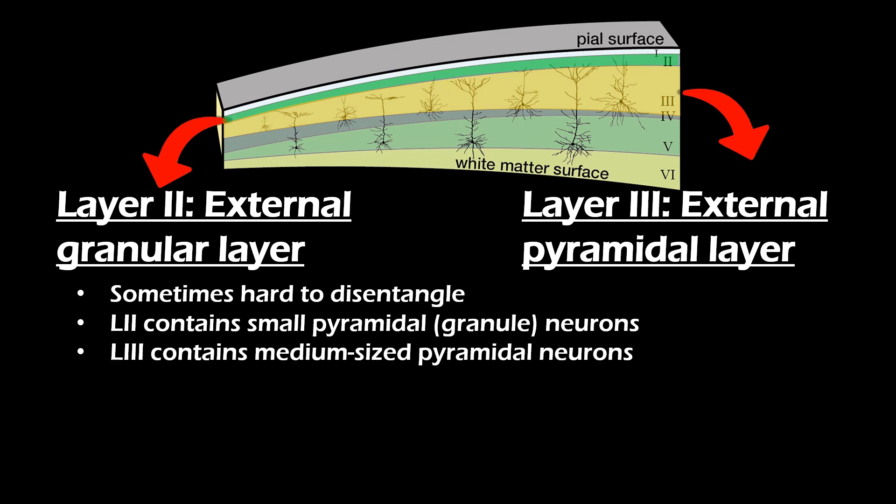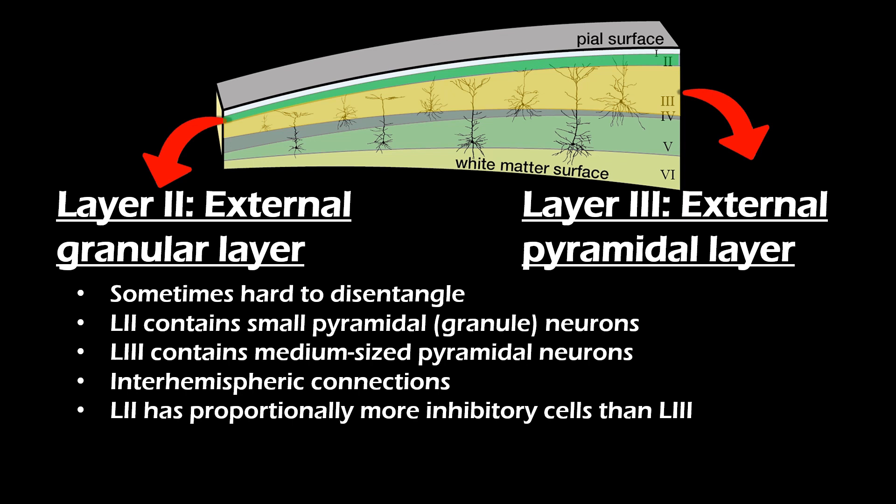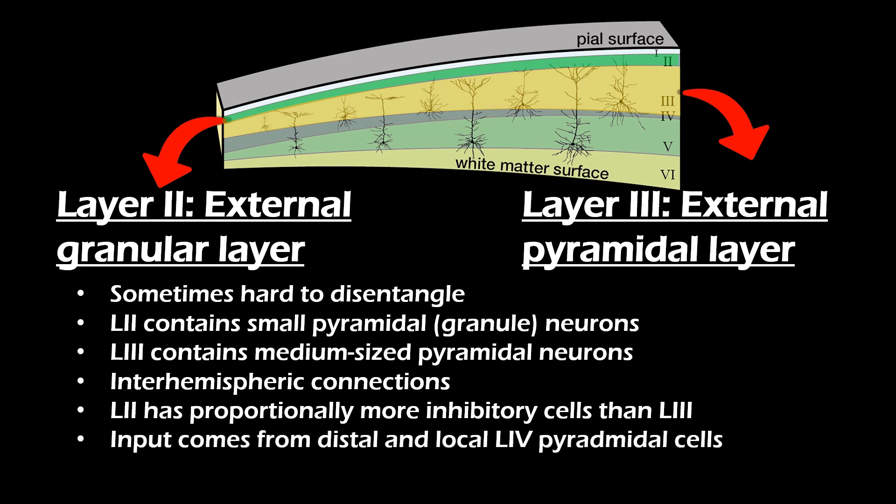Both layer 2 and 3 receive cortical input largely from the other hemisphere. As such, these layers are thought to integrate inter-hemispheric signals. Besides pyramidal cells, which are excitatory, there are also small inhibitory cells in both layers. The ratio between inhibitory and pyramidal cells is slightly higher in layer 2 compared to layer 3. Besides input from distal regions, neurons in layer 2 and 3 also receive input from local layer 4 pyramidal neurons. A large amount of output from layer 2 and 3 neurons goes to layer 5 pyramidal neurons.